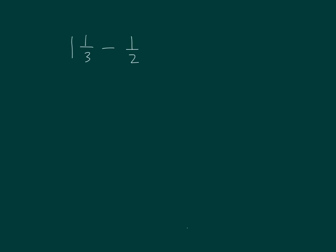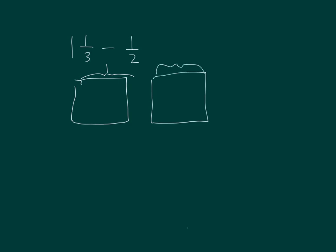First, let's model 1 and 1 third. There's 1, and there's 1 third. We have 1 and 1 third. If we're subtracting 1 half, then we can make like units.